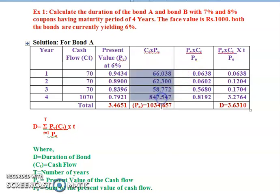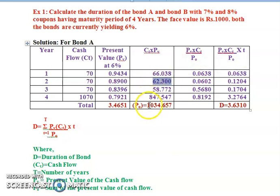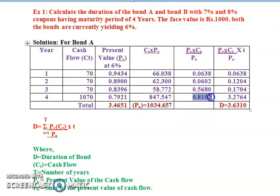Next we calculate the PV times CT divided by P-naught column. For year one: 66.038 divided by 1034.657 equals 0.0638. For year two: 62.300 divided by 1034.657 equals 0.0602. For year three: 58.772 divided by 1034.657 equals 0.0568. For year four: 847.547 divided by 1034.657 equals 0.8192.